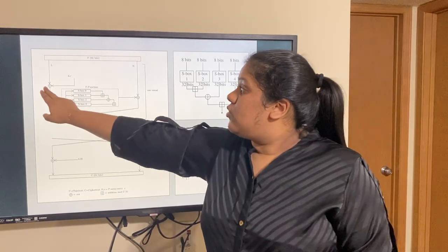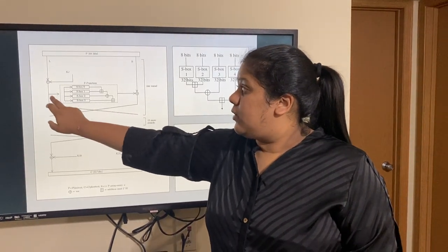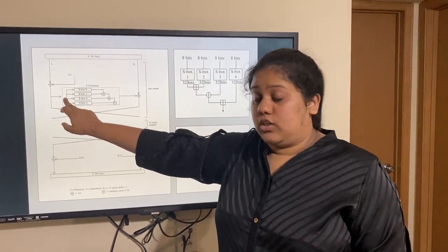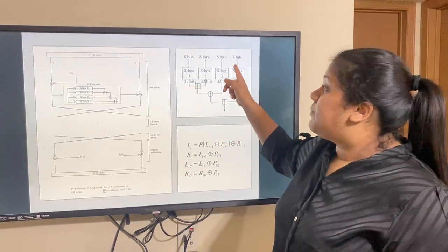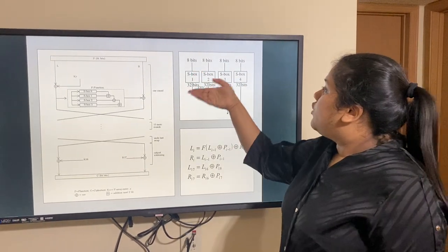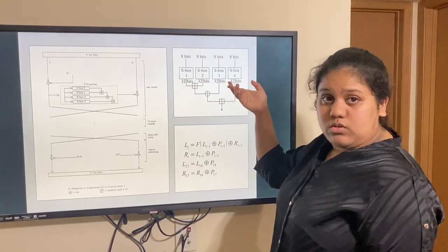So, the value after XORing here is a 32-bit value that goes into the function. And then, it is divided into 4 equal parts of 8 bits each. After going through the S-box, we get 32 bits of output.